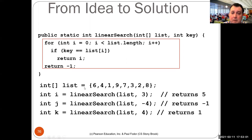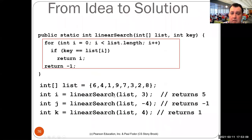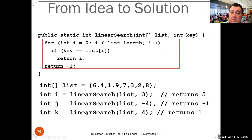Here is an example. The list is the array we saw before — 6, 4, 1, 9, 7, 3, 2, 8 — and we're looking for element 3. It returns index 5; yes, it's at index 5. Then linear search of list and -4: is -4 in that list? It's not. We reach the end and return minus one. Then linear search of list and 4 will find 4 at index 1 and return index 1. Linear search is just a sequential search through the list for that element.